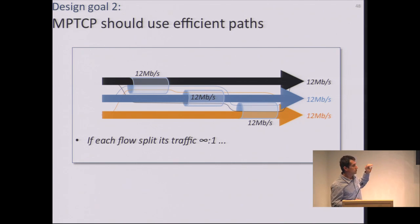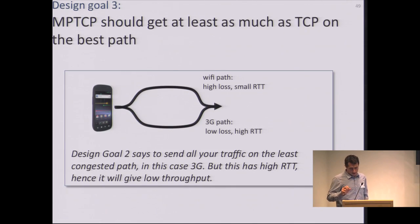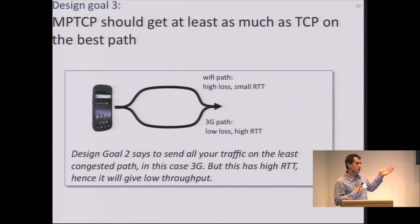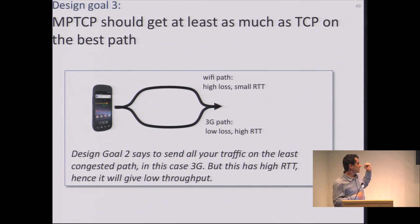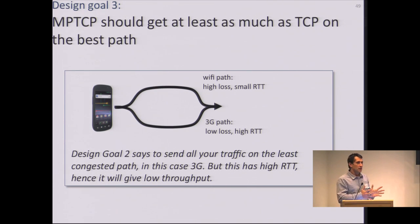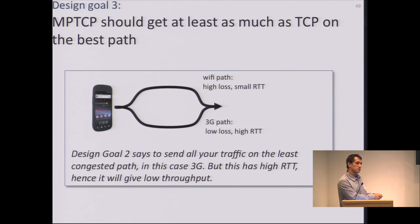Goal 3 ensures an incentive to deploy multipath TCP: in aggregate, multipath TCP should get at least as much throughput as TCP would get on the best single path that multipath is using. You take all paths multipath TCP is using, look where you get the best TCP throughput, and you should get at least that.